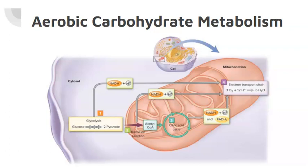Stage four is the electron transport chain. The NADH and H+ produced by the first three stages, and the FADH2 produced in the third stage, enter the electron transport chain. NADH and H+ is oxidized to NAD+, and FADH2 is oxidized to FAD. Remember that oxidized means to gain oxygen and lose hydrogen, which can be seen by the loss of hydrogen in the names. At the end of the electron transport chain, oxygen is combined with the hydrogen ions and electrons to form water. Most ATP is formed in the electron transport chain, which is why the mitochondria is the powerhouse of the cell.